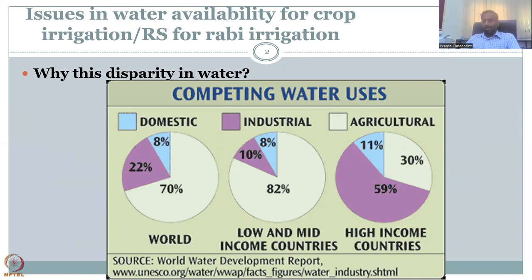In today's lecture, I would like to discuss issues in water availability for crop irrigation, especially Rabi irrigation and Zaid irrigation — that is, non-monsoon irrigation. We will club them together and call it non-monsoon irrigation. But before that, I want to revisit an important graph.